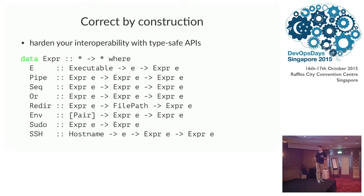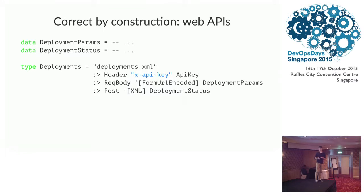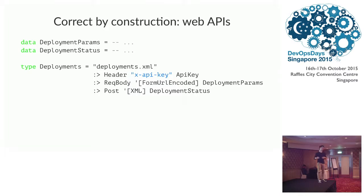We actually use correct-by-construction and safe-by-default practices to limit the ways we use bash to prevent ourselves from doing bad things. There's also a simple example of correct-by-construction for web APIs: you can specify the whole structure of a web API as a type, and then have powerful type system machinery generate functions that operate on the type just by knowing its shape. Here we can specify a deployment API in just four lines of code and generate type-safe API client code for it — without even writing any implementation code, just by writing a type.